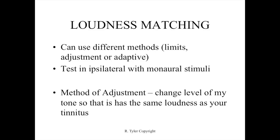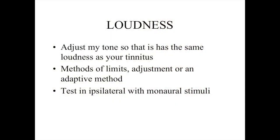With the loudness matching, you can use different methods — the method of limits and adjustments — where you're going to adjust the level of my tone so it equals your tinnitus. There's no one right approach to this. It depends on the equipment you're working with, for example a standard clinical audiometer or a particular system for measuring tinnitus, and maybe also the patient's familiarity with estimating. The strategy is pretty clear: adjust the level of my tone so it has the same loudness as your tinnitus. This could be done in the ipsilateral ear with monaural stimuli — the disadvantage is you might change the tinnitus in the same ear, but the advantage is you don't have to worry about loudness growth and loudness recruitment in two different ears being different.